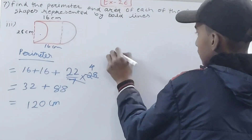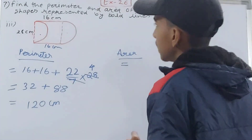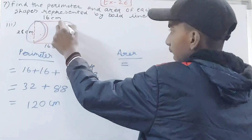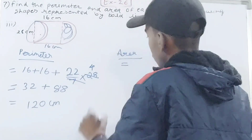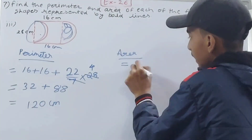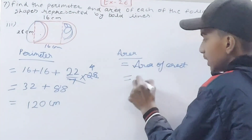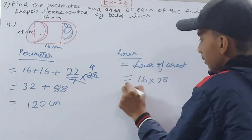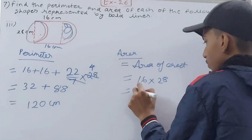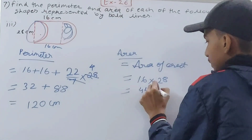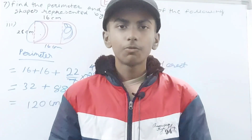Now for the area. This part has been cut off but added back over here, so the area remains just the rectangle — nothing changes. Area = 16 × 28 = 448 square centimeters. And that is your answer.